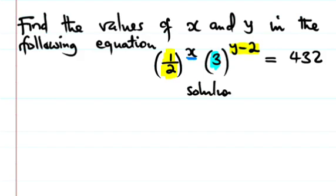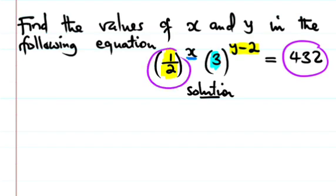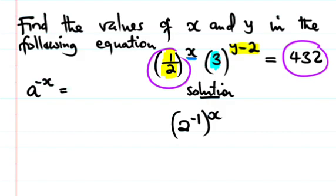This is what we're going to do. We need to apply laws of indices on the left side of the equation. This one half here can be written as 2 to the power of negative 1. You can watch my previous video when I was doing laws of indices — for example, a to the power of negative x can be written as 1 divided by a to the power of x.